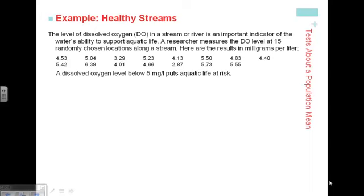It's January 31st, 2012, and this is the conclusion of the 9-3 lecture. We had left off at this point where we were given a bunch of data and we were asked to say, does this data give us conclusive evidence that the dissolved oxygen level in the stream is below 5 milligrams per liter?